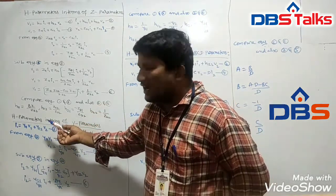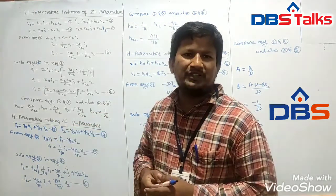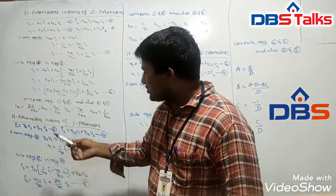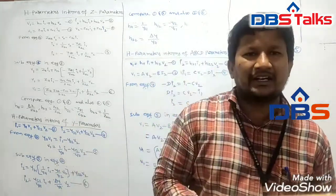If the circuit is a reciprocal circuit, then H12 = −H21; that is the condition for reciprocity, as already discussed in previous videos. Now let's go to another interrelation.